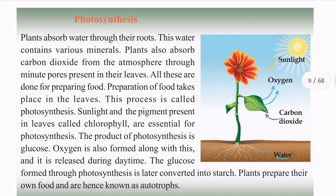Carbon dioxide, sunlight, and chlorophyll — the nutrients are processed and food is prepared. This is photosynthesis. The plants prepare food; it is glucose.